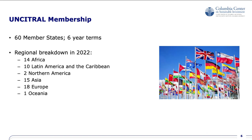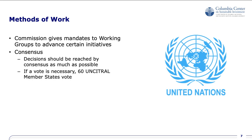Membership in the commission currently consists of 60 member states. Terms last for a six-year period, and there are elections every three years for 30 member states. The current geographical distribution is displayed on the slide. The commission gives mandates to working groups to advance certain initiatives. Decisions at the commission should be reached by consensus as much as possible, meaning that member states seek to reach agreement on a mutually acceptable course of action. This long-standing principle applies to the commission and also to working groups. Where consensus is not reached, decisions are taken by a vote, and all 60 UNCITRAL member states must vote, with voting procedures governed by relevant rules of procedure of the UNGA.